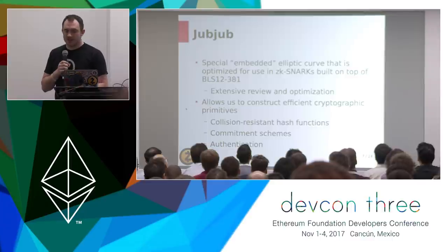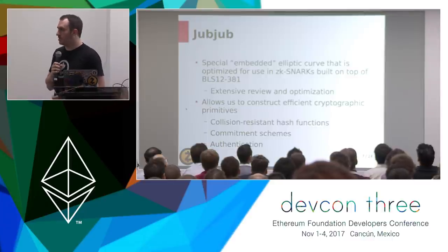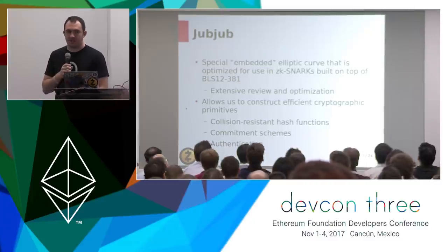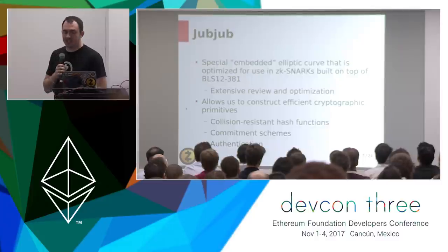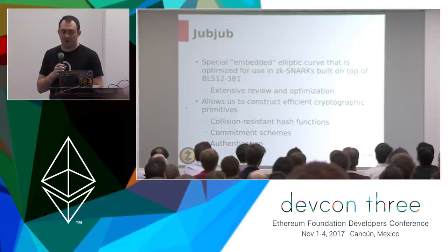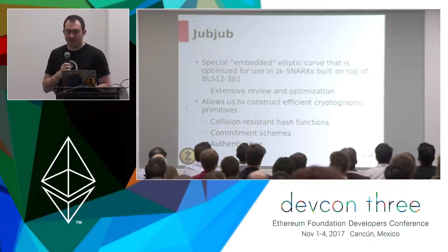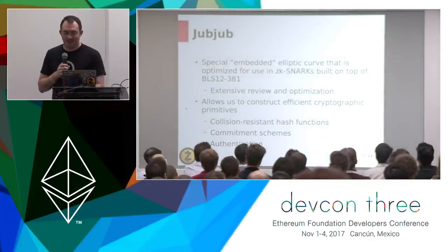We've implemented and prototyped this new curve, and building software like Zcash with arithmetic circuits, we end up with significantly better performance — almost five to ten times better. There are more optimizations I'd like to talk about, but I can't because they're part of ongoing papers.